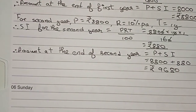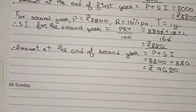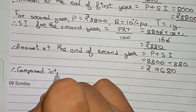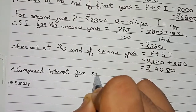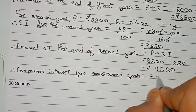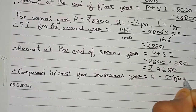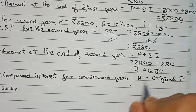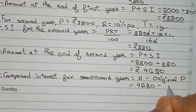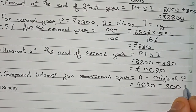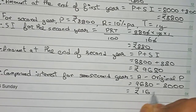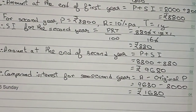The question asks for the compound interest for the second year. The compound interest formula is Amount minus the original principal. So CI = 9680 − 8000 = rupees 1680. This is the compound interest for the second year.